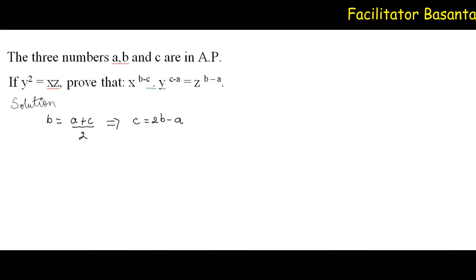Similarly, what is given: Y squared equals XZ, which means Y squared equals XZ, or Y can be written as XZ to the power 1 upon 2. So the power of X is 1 upon 2 as well as Z is also 1 upon 2.